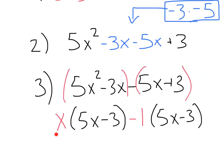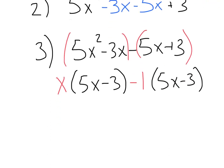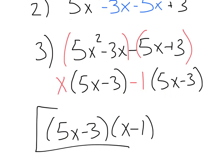We can pull out an x, leaving 5x minus 3. Then a negative 1. Remember, this sign has to flip, so we get a 5x minus 3 also. Perfect. Taking out our group, we get 5x minus 3 times x minus 1, and we are done.